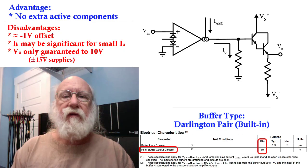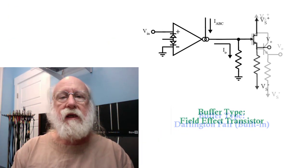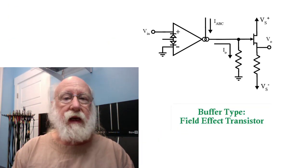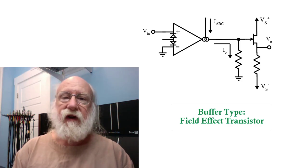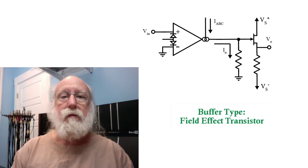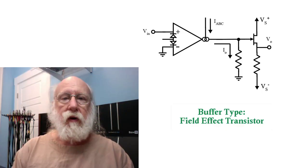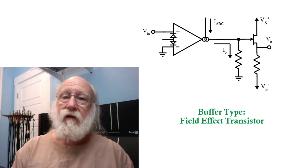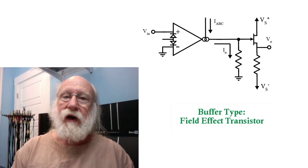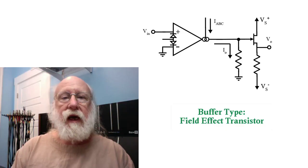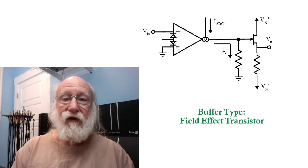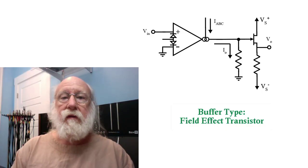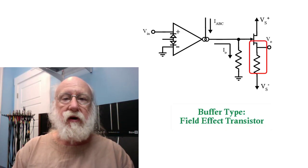The next type of buffer we will consider is an FET buffer. This might be a JFET or a MOSFET. The MOSFET would have the advantage of a much lower input current than the JFET, although the JFET would not have a very high input current either. But in either case, you connect the FET as a source follower, very much like the emitter follower, where the source is connected to your negative supply through a resistor.